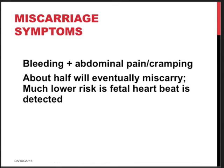Typical symptoms of miscarriage are bleeding and lower abdominal pain, which is cramping in nature — the woman will recognize it as menstrual pain. About half of women will eventually miscarry when presenting with bleeding and pain, so a threatened miscarriage means 50% will miscarry and 50% will have an ongoing pregnancy. This figure is much lower if fetal heartbeat is detected on ultrasound scan — we can then be quite optimistic about the outcome.